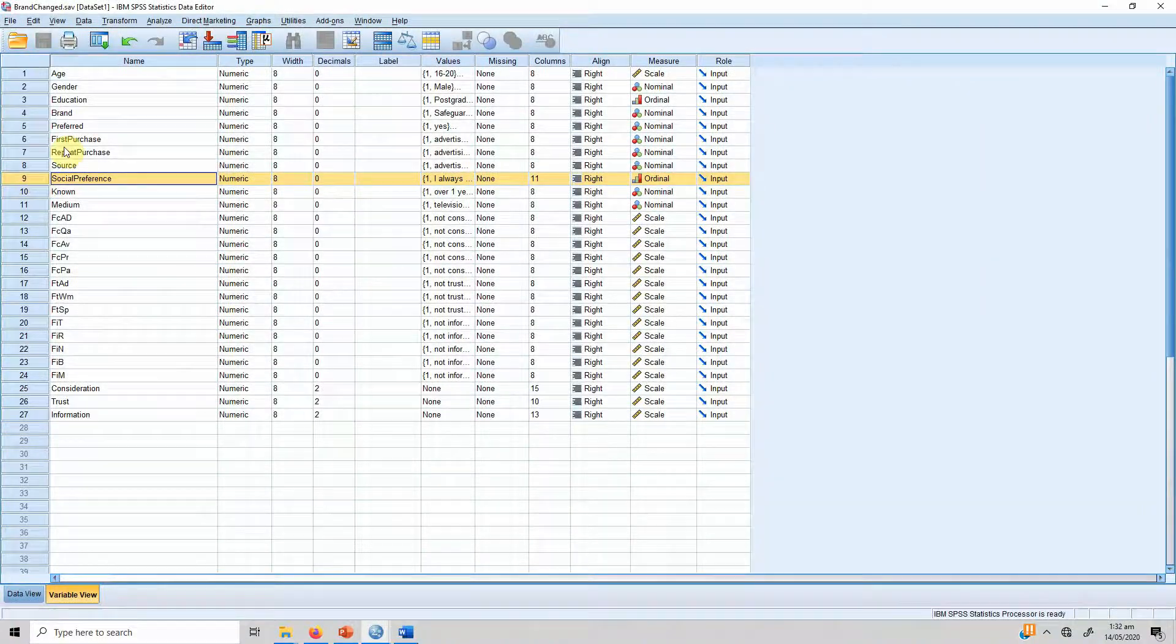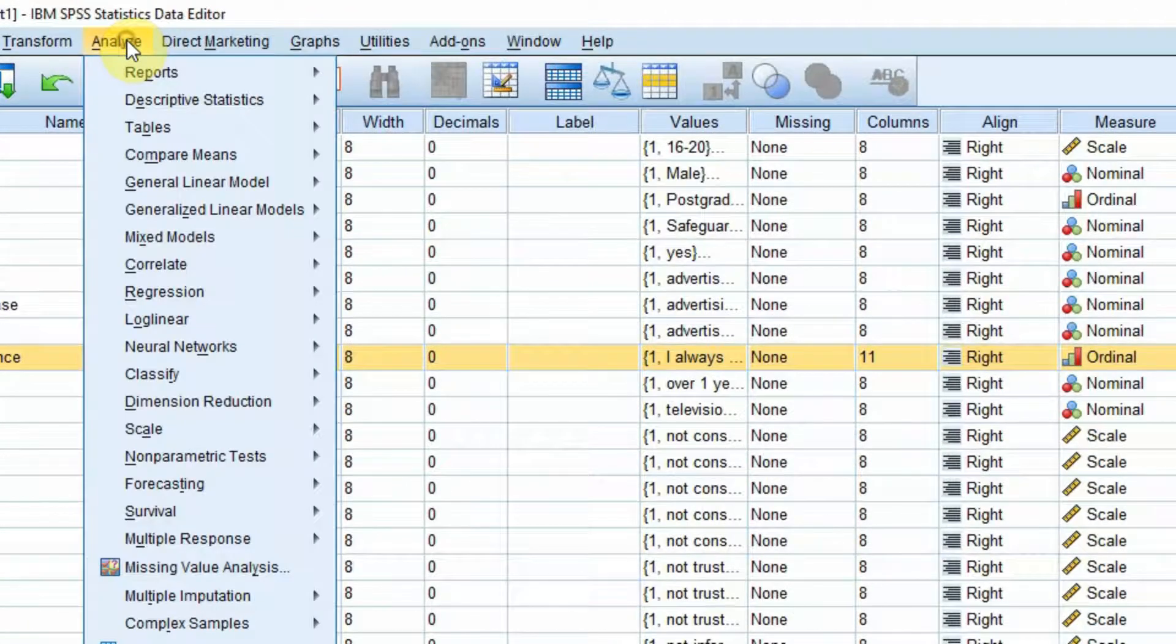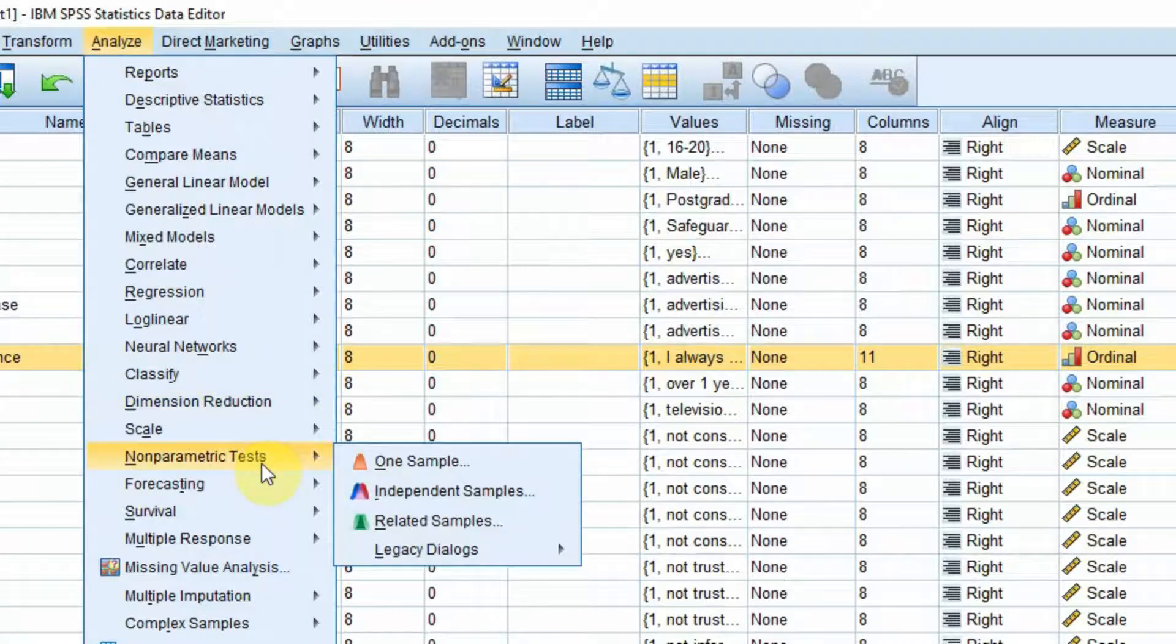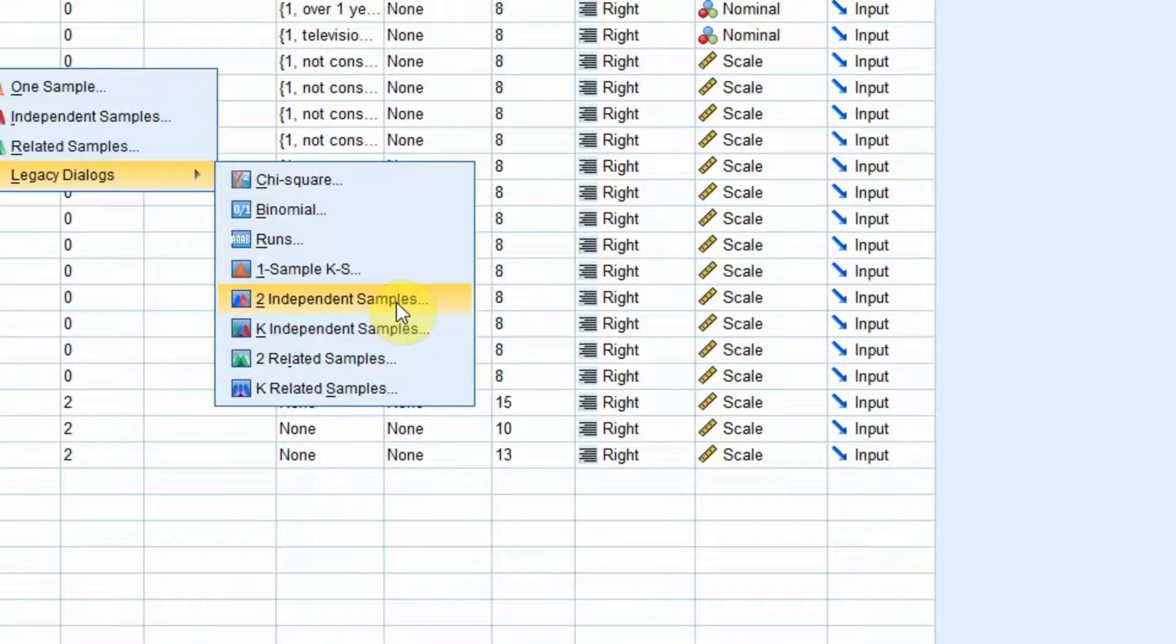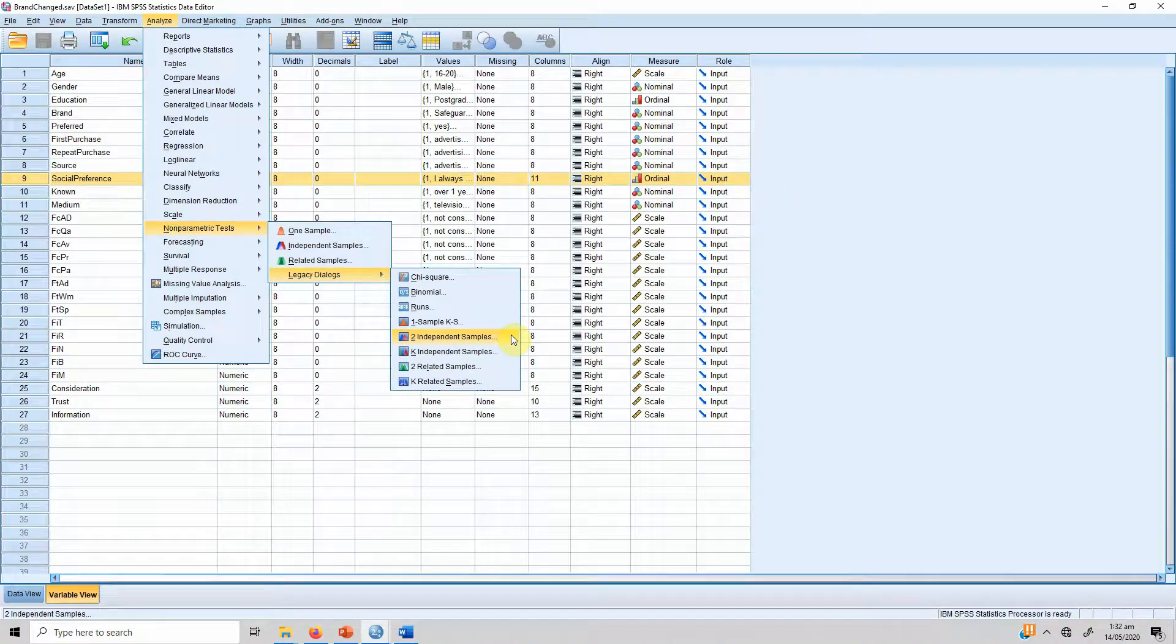In order to run this test, what you can do is go to analyze, non-parametric tests, legacy dialogue, and two independent samples. In this case, our independent samples come from male and female respondents, while we want to check the differences in social preference or social media preference between male and female.